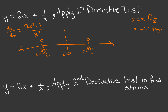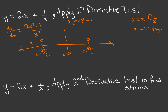For any x less than −√2/2, say x = −2, we get 2(4) − 1 over a positive denominator, which is a positive number — so f' is positive there. For x between −√2/2 and 0, say x = −0.1, we get 2(0.01) − 1, which is a very small but negative number — so f' is negative in that interval.